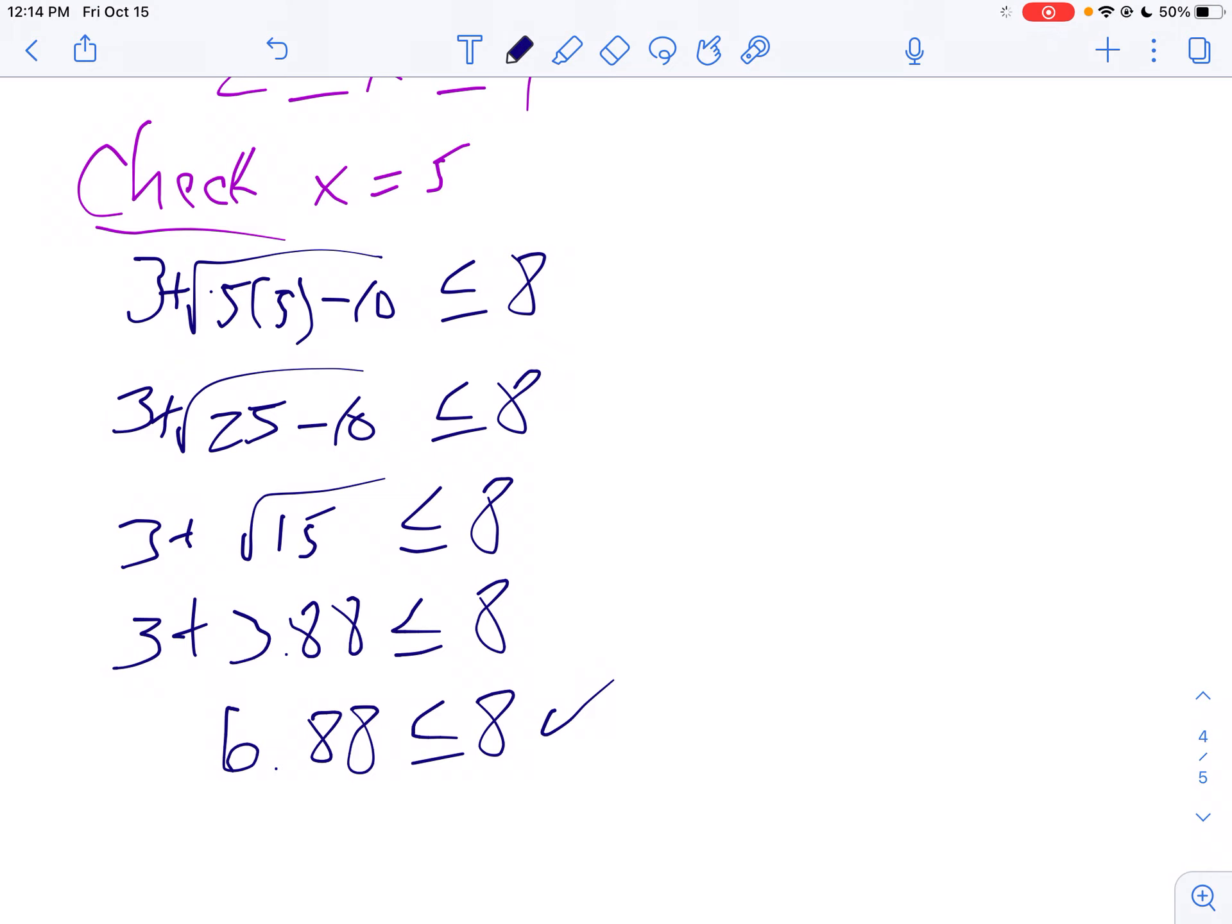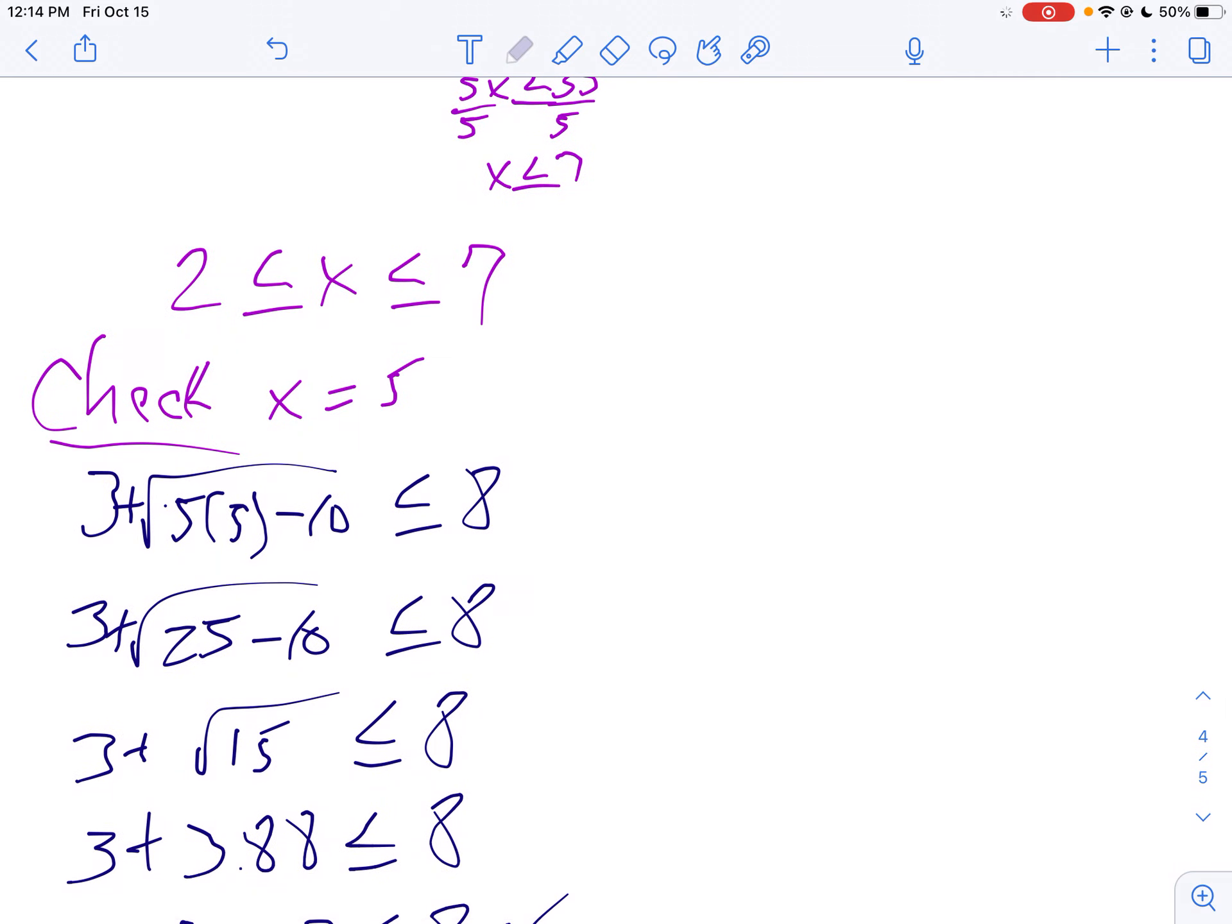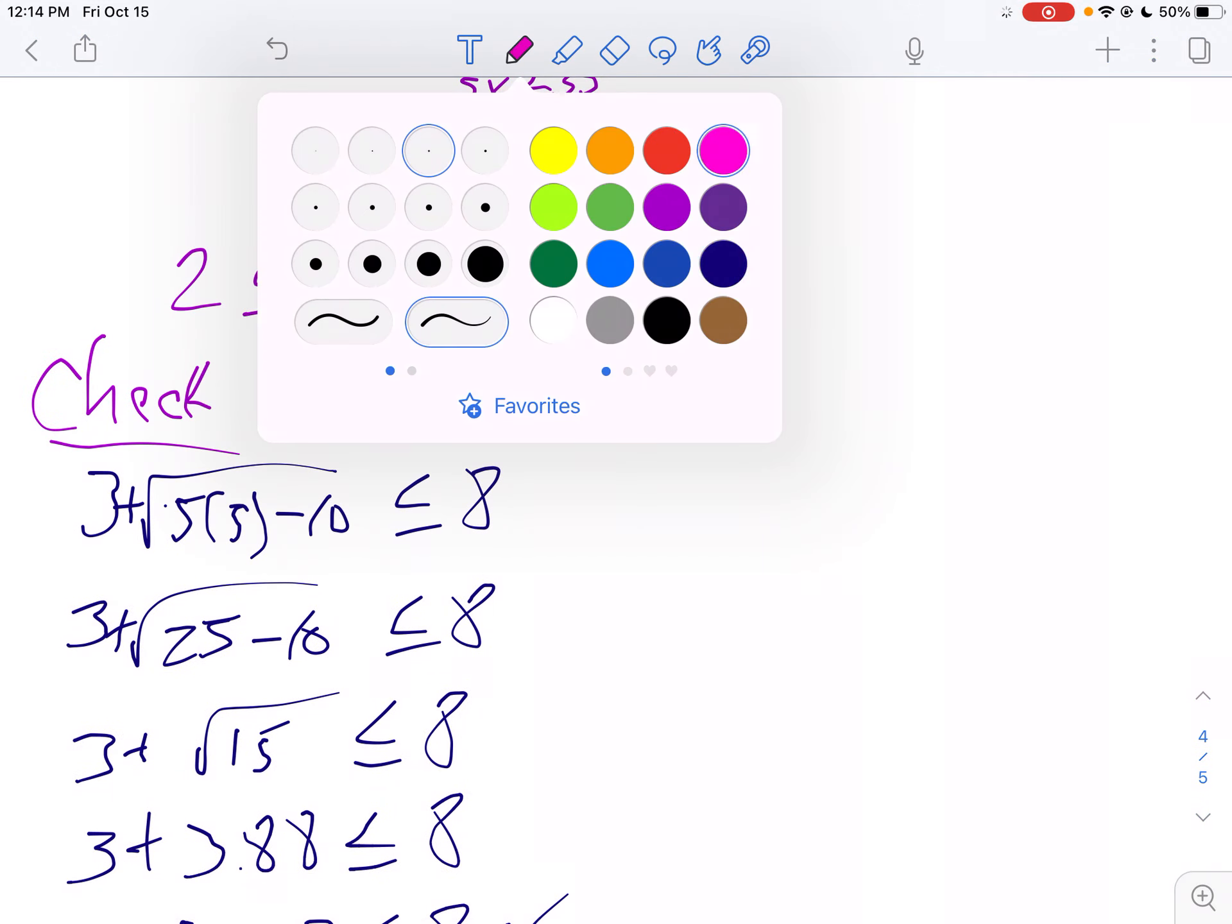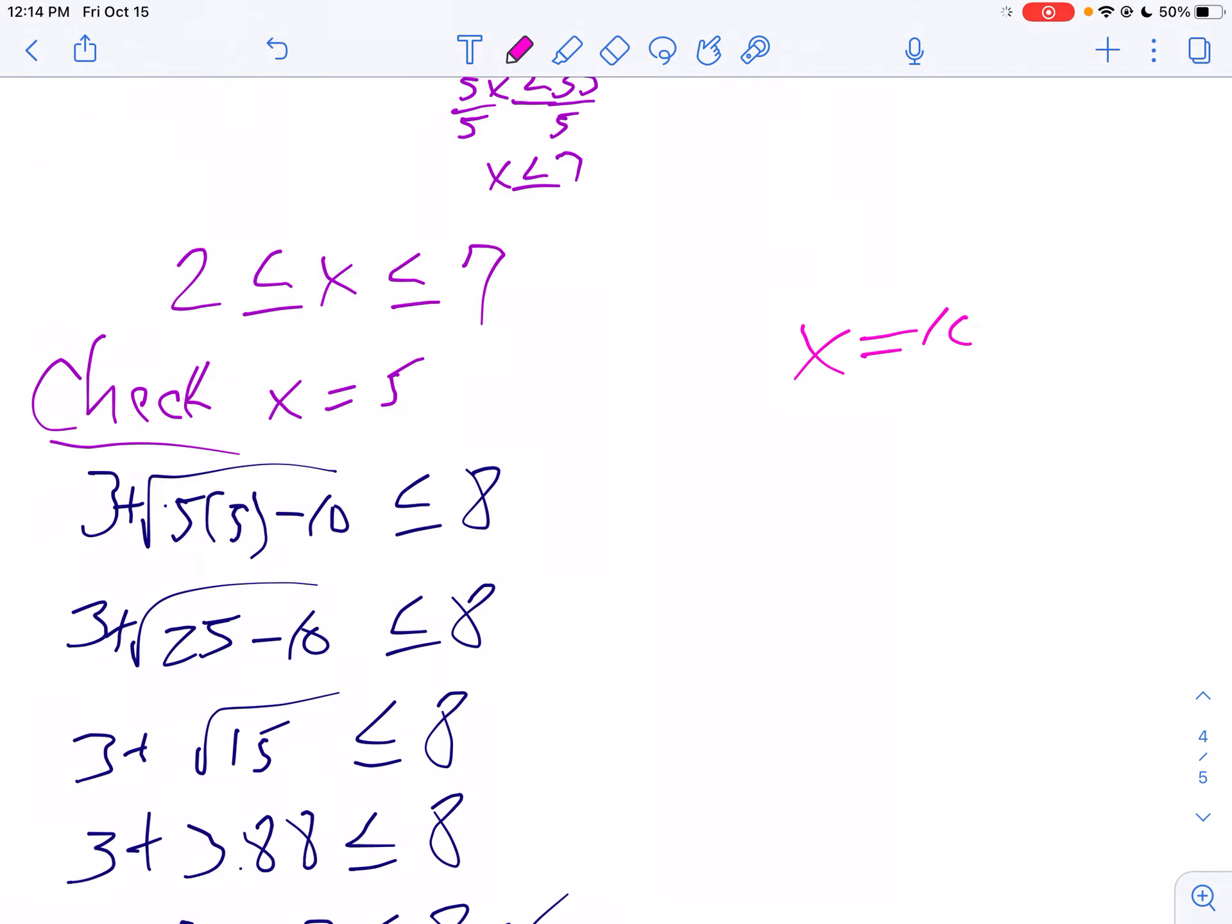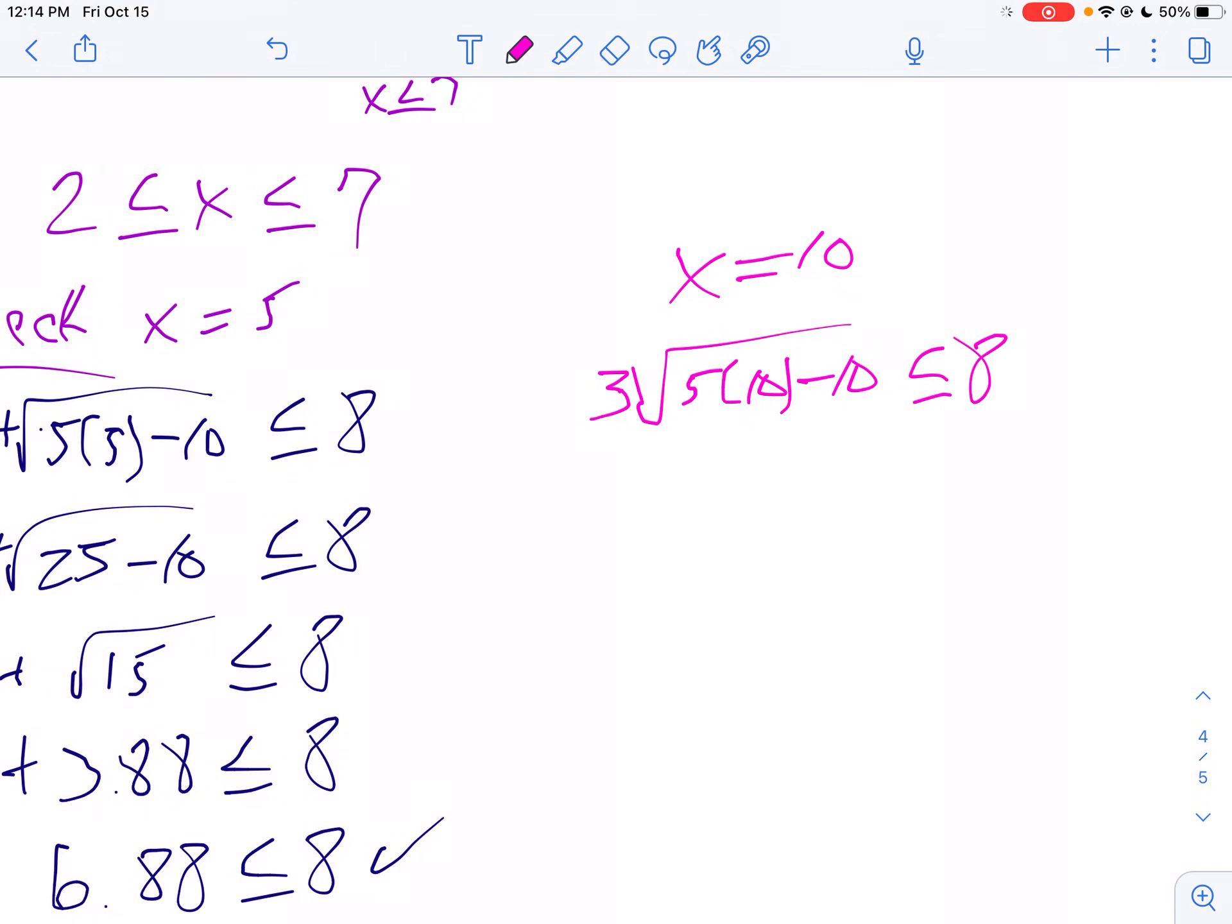Let's check that numbers outside our range don't work. Let's pick x equals 10. So 3 plus the square root of 5 times 10 minus 10, is that less than or equal to 8? Well, 5 times 10 is 50, so 50 minus 10 is 40.